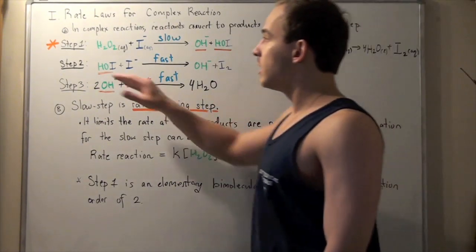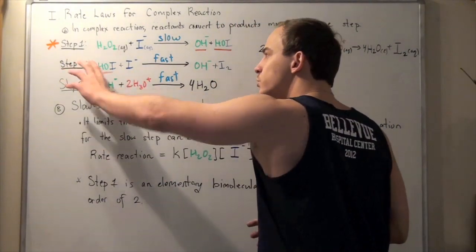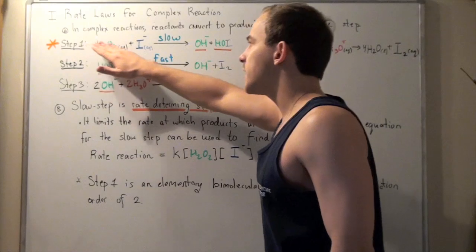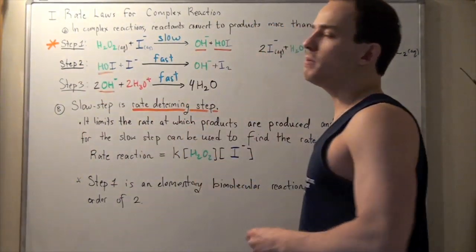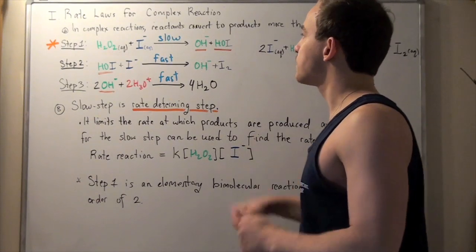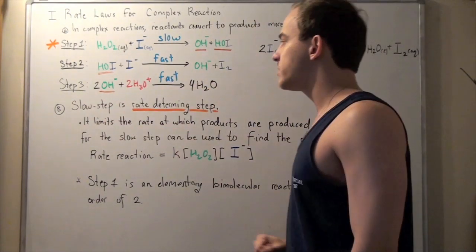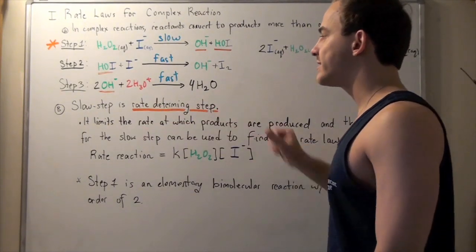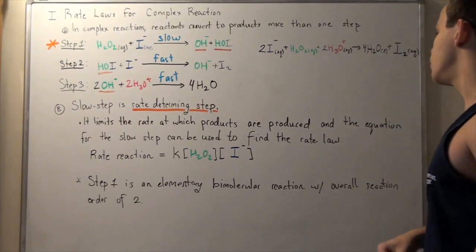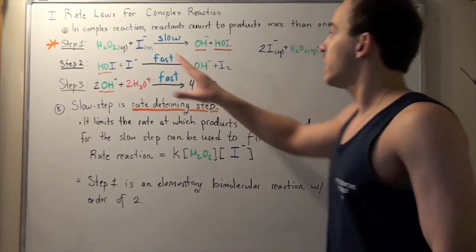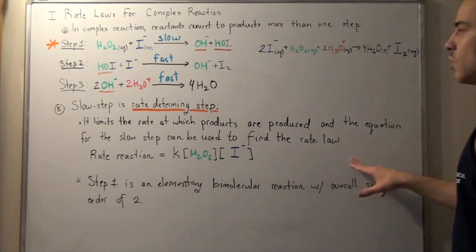Now, let's go back to this step. Now, relative to the rates of these two steps, this is a very, very, very, very slow step. And in fact, these steps can be assumed to be instantaneous, very quick. So, what's the significance of this slow step? Well, this slow step is called the rate-determining step. And this step limits the rate at which products are produced, and this equation, or this reaction, can be used to find the rate law.